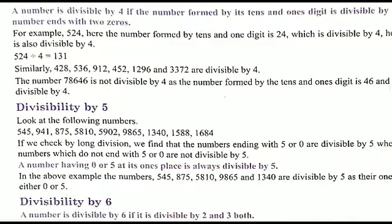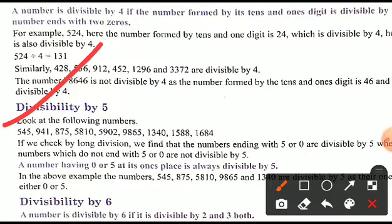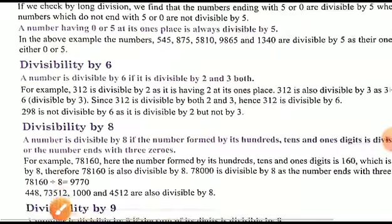Divisibility by 5: a number having 0 or 5 at its ones place is always divisible by 5. For example, 545, 875, 5810 are divisible by 5. If a number does not have 0 or 5 at its ones place, it is not divisible by 5.